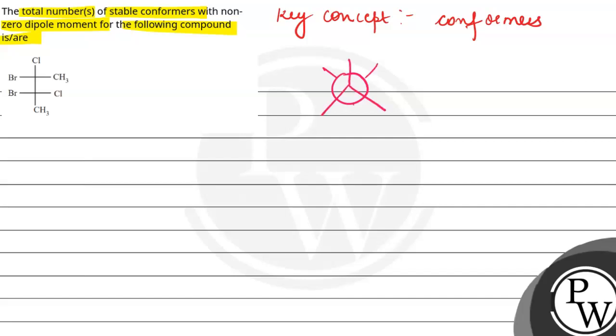So one is like this, here is chlorine, CH3 and here is bromine. Because we have basically two carbons, so we have to adjust these two carbons. So one carbon is chlorine,